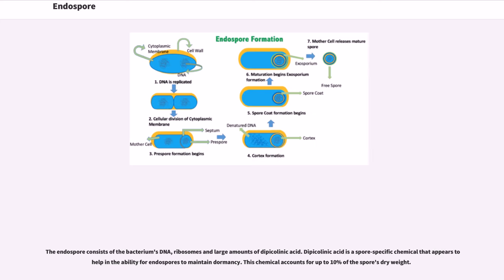The endospore consists of the bacterium's DNA, ribosomes and large amounts of dipicolinic acid. Dipicolinic acid is a spore-specific chemical that appears to help in the ability for endospores to maintain dormancy. This chemical accounts for up to 10% of the spore's dry weight.